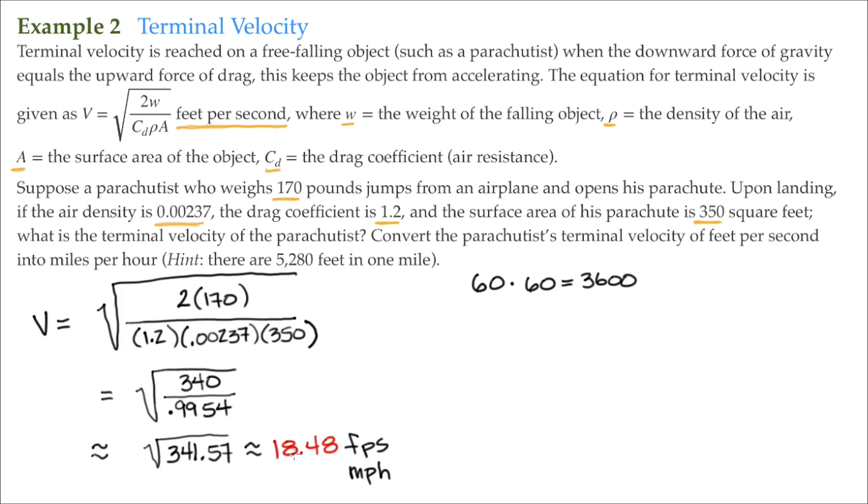So if they're traveling 18.48 feet in one second, how many feet did they travel after one hour, which is 3,600 seconds? Well, we'll just take the 18.48 and multiply that to the 3,600 seconds, which is an hour. That comes out to be 66,528 feet.